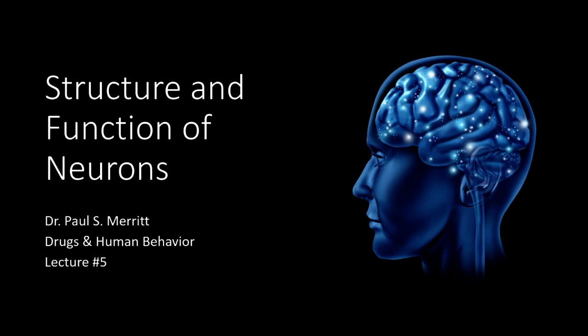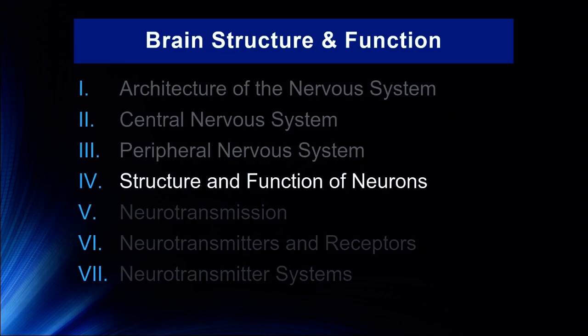Hello, and welcome to lecture number five in Drugs and Human Behavior. In our last lecture, we talked about some basics of navigating the central and peripheral nervous systems and some of their major structures. In this fairly brief lecture, we're going to talk about the overall structure of neurons and the functions of those particular structures. We still have neurotransmission, neurotransmitters, and receptors coming after this.